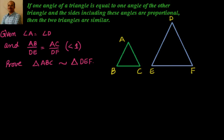We have been given that angle A is equal to angle D, and also we have been given that AB divided by DE equals AC divided by DF — meaning the sides included in this angle are proportional to each other. So what we have to prove is that these two triangles are similar to each other.